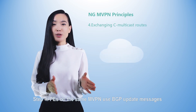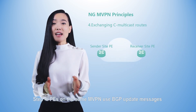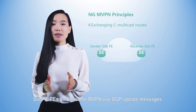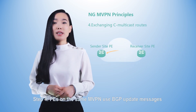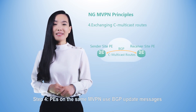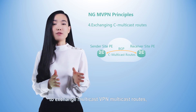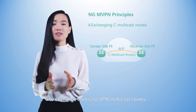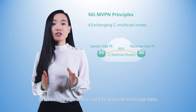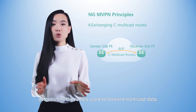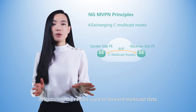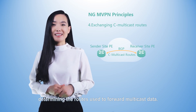Step 4: PEs on the same MVPN use BGP update messages to exchange multicast VPN multicast routes, determining the routes used to forward multicast data.